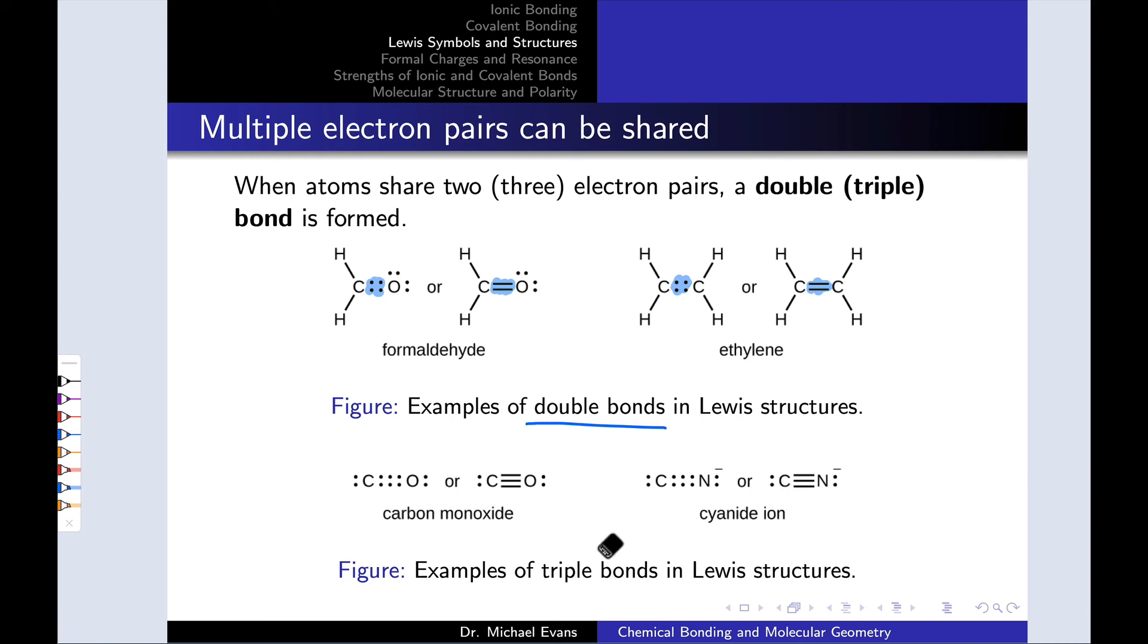Here we see two examples of triple bonds in Lewis structures. In carbon monoxide, the carbon and oxygen are sharing six total electrons, and in the cyanide ion, which is actually isoelectronic with carbon monoxide, the carbon and nitrogen are sharing six total electrons. And again, with the line formalism, we use three lines to represent those three shared pairs of electrons in the triple bond.